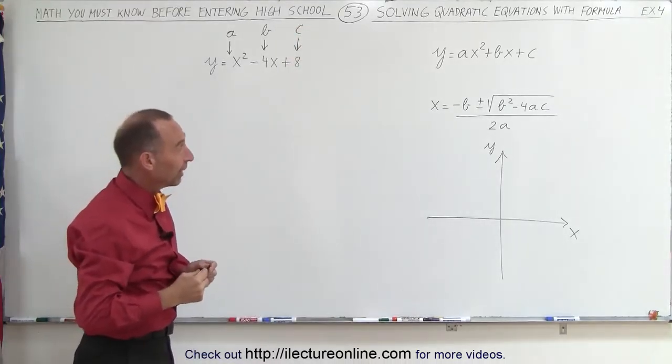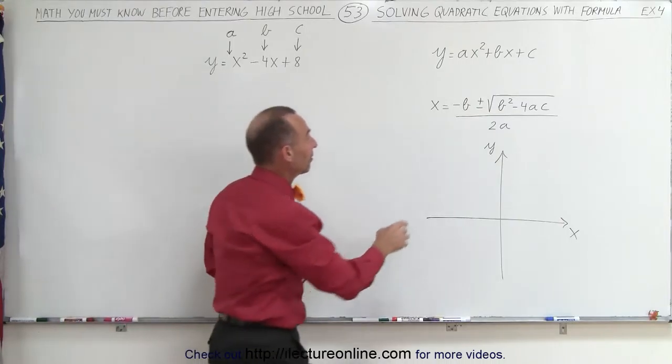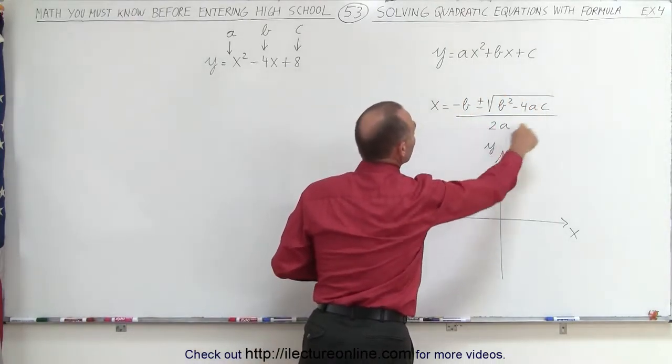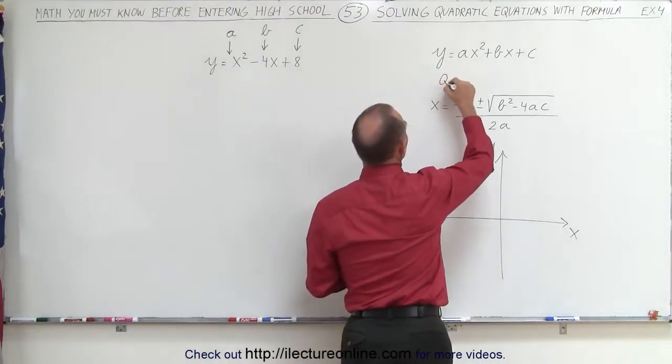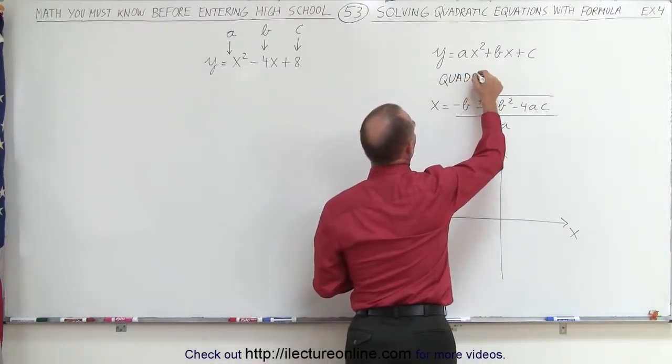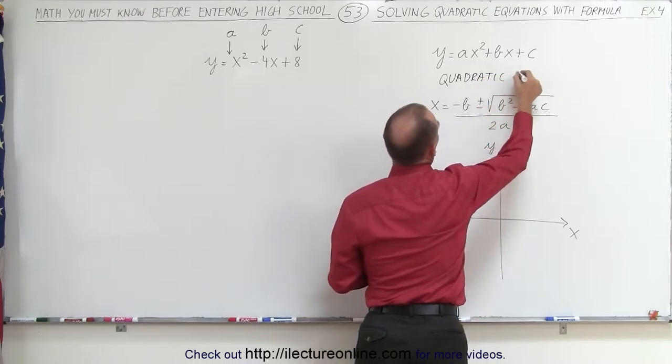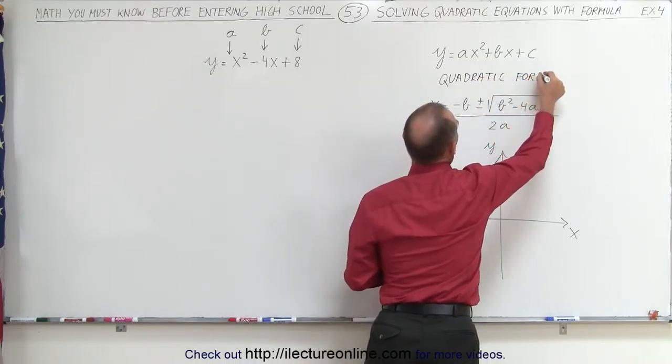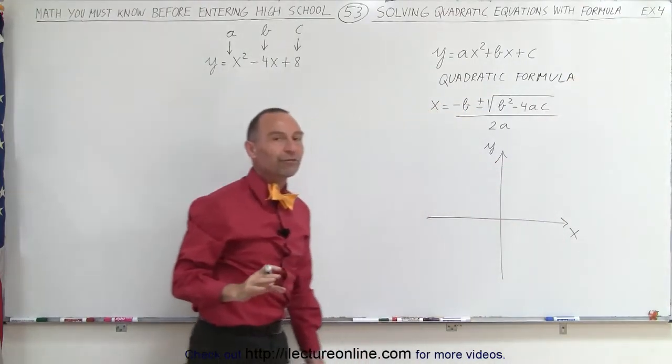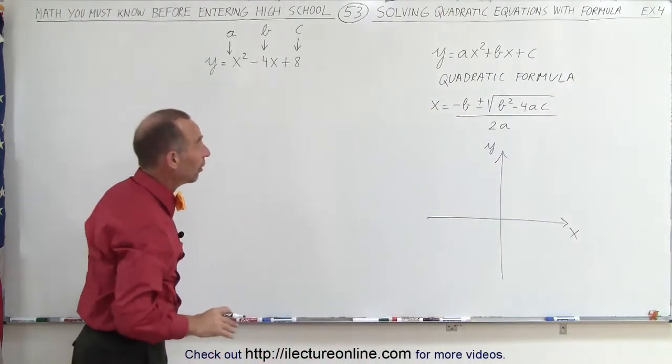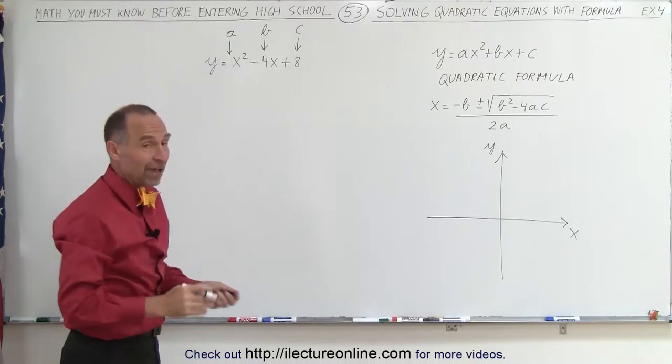So we could find the value of x where it crosses the x-axis by simply plugging it into this equation here. This is known as the quadratic formula. But first what we're going to do is try and solve it using factoring, because that usually works pretty nice if it's factorable.